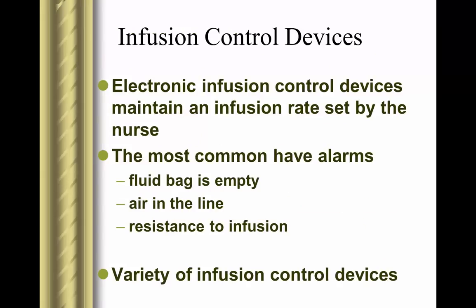Infusion control devices are pumps. Generally, they have alarms when your bag is empty, when the rate to be infused reaches zero, if air comes through the cassette, or if there is resistance to the infusion. There are a variety of infusion control devices. In our lab, we have Baxters and Plums; you may have seen other types in your clinical setting, and we will work with these on Thursday.